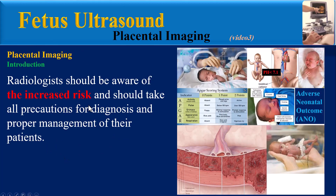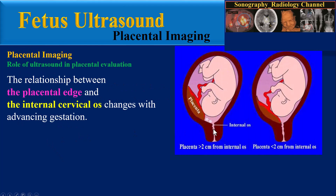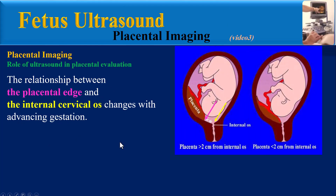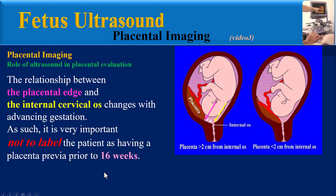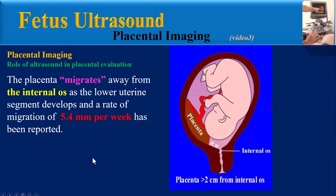Presence of placenta previa increases risk of placenta accreta spectrum. The relationship between the placental edge and internal cervical os changes with advancing gestation, so it is very important not to label a patient as having placenta previa prior to 16 weeks. The placenta migrates away from the internal os as the lower uterine segment develops, at a rate of 5.4 mm per week.